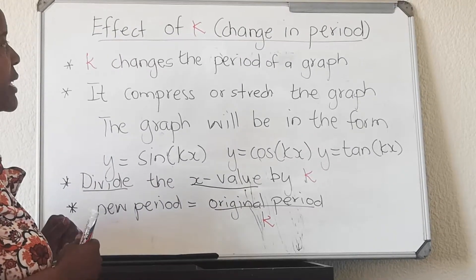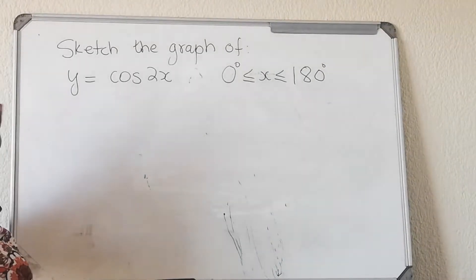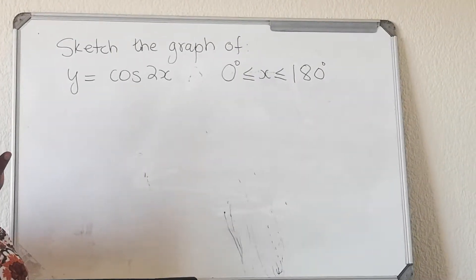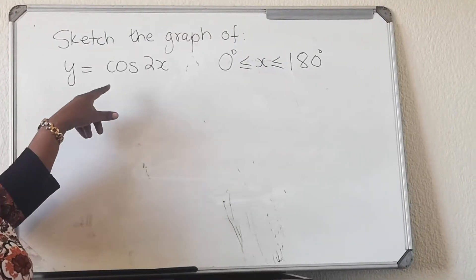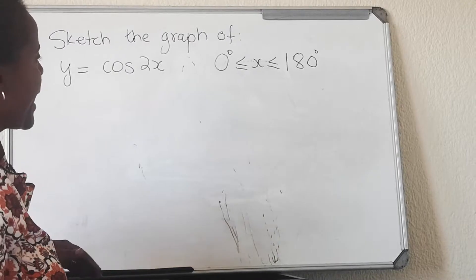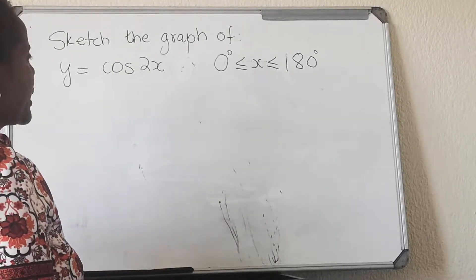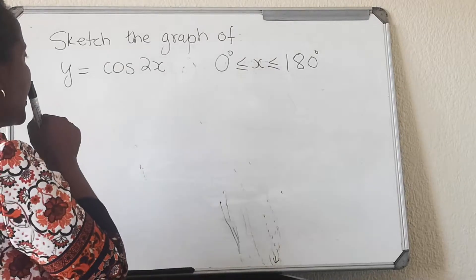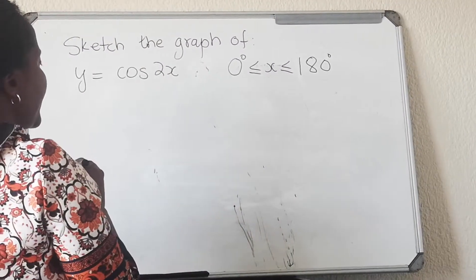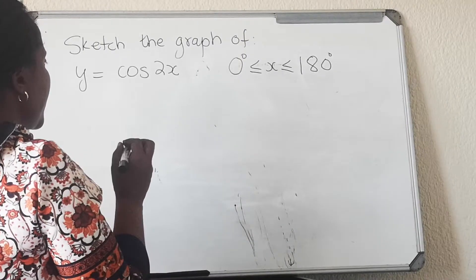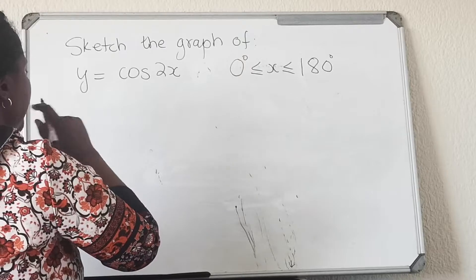Here is an example of the type of question you might get in the question paper. It says: sketch the graph of y equals 2cos(2x) on the interval where x is greater than or equal to zero and x is less than or equal to 180 degrees. You look at the function — it is a cosine function.